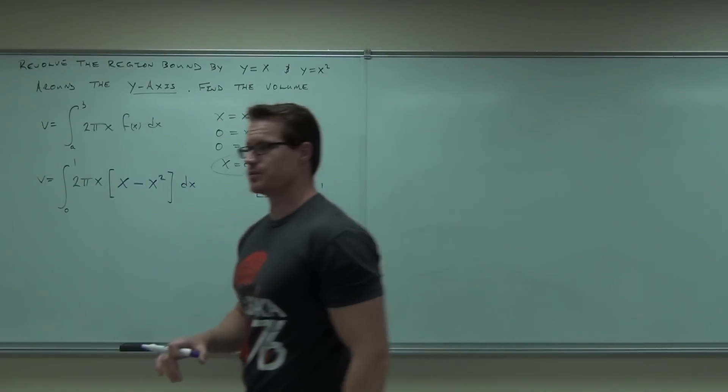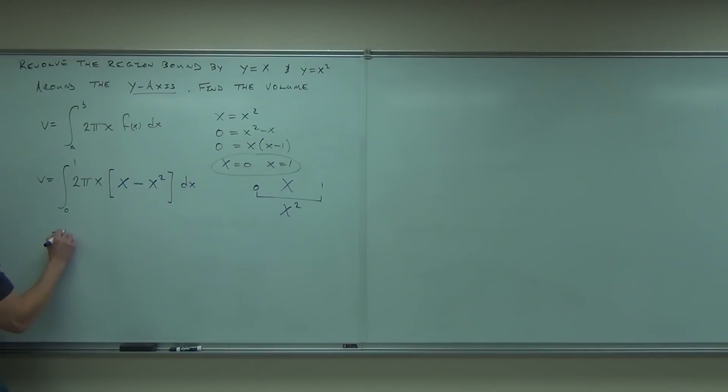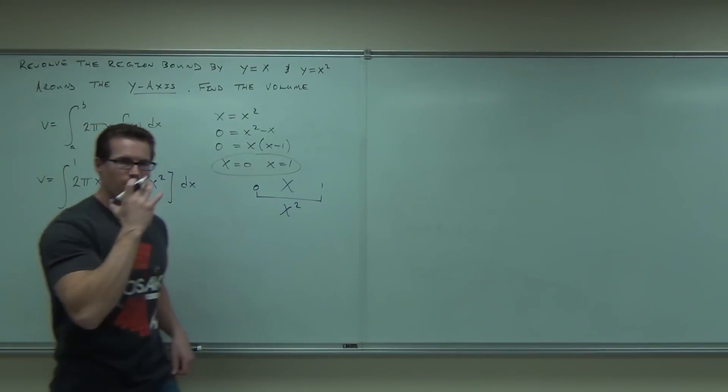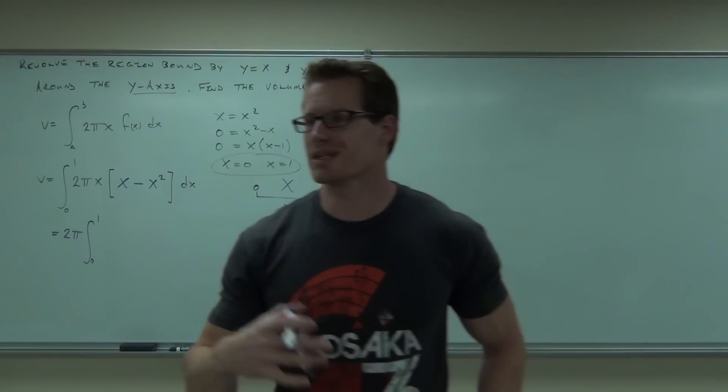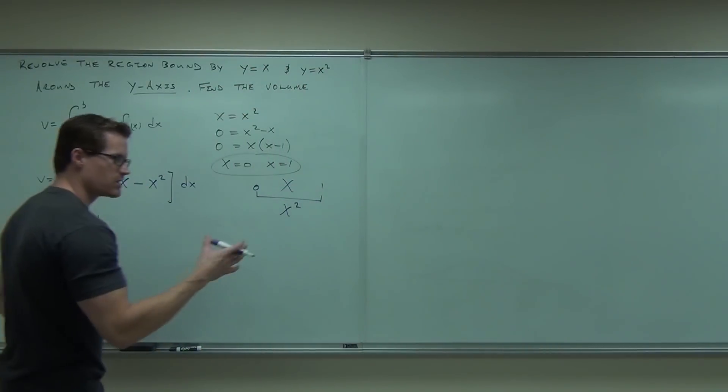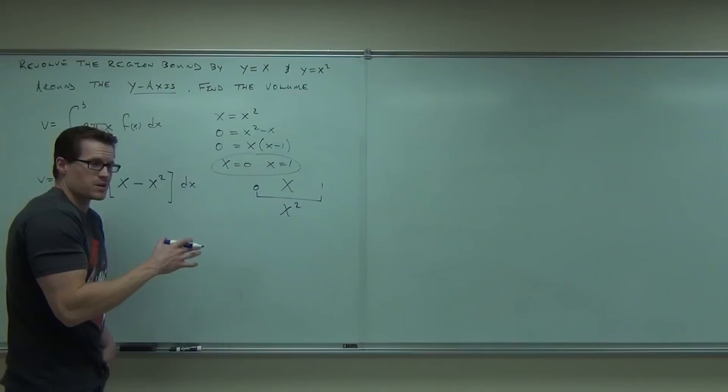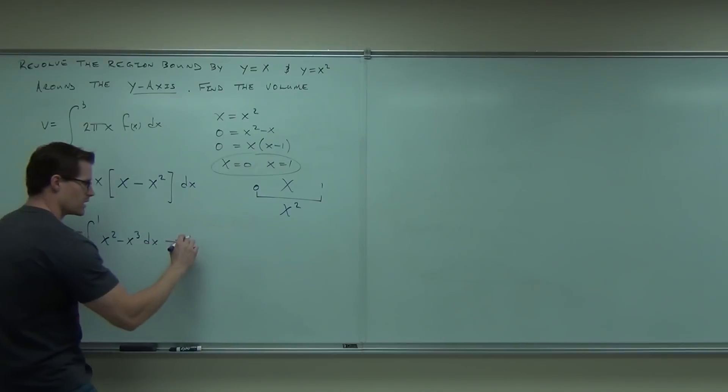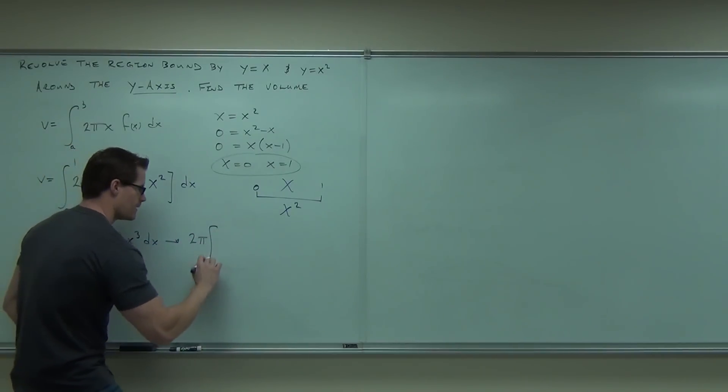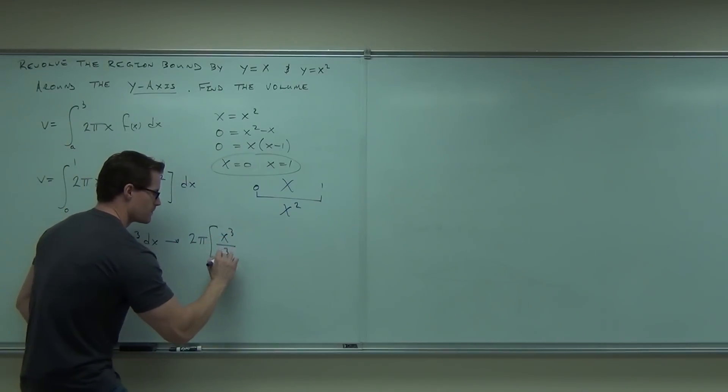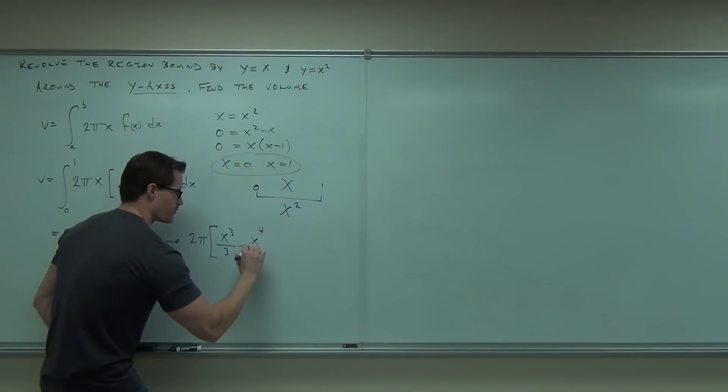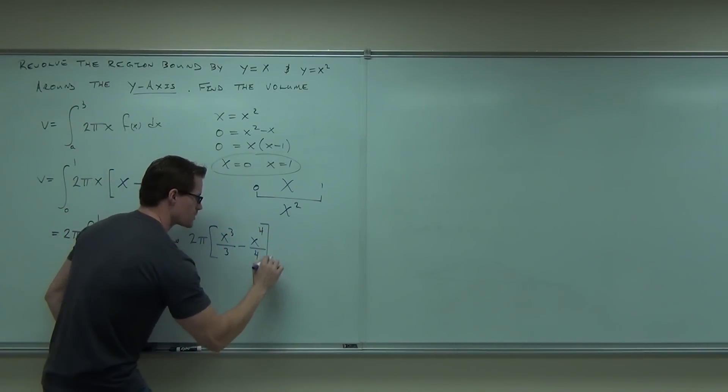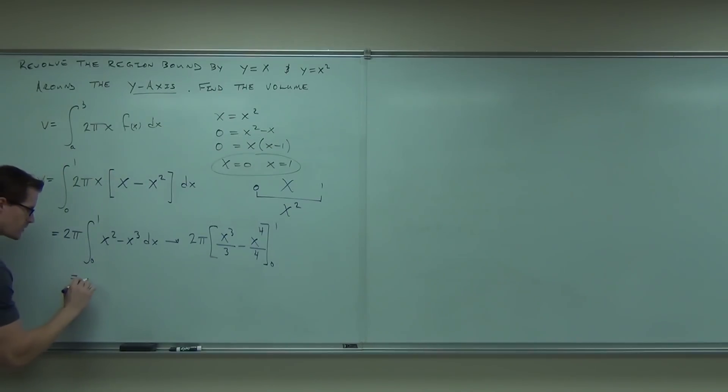Let's work on how to do that integral. What's the first thing you would do? I'd probably pull out 2π as well. From zero to one, what else? Distribute. Don't try a substitution if you can do it easier than that. Most of these aren't substitutions. Just a little manipulation. x squared minus x cubed dx. That means we're going to get 2π, x cubed over 3 minus x to the fourth over 4, going from zero to one.